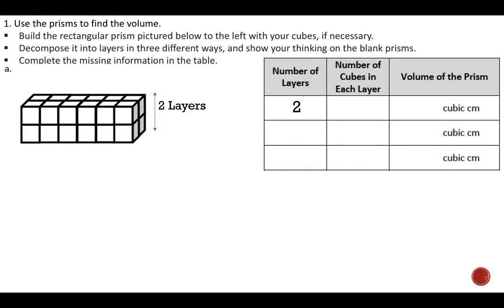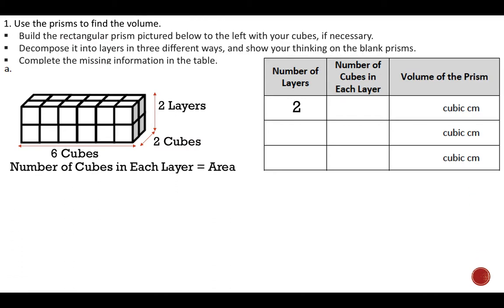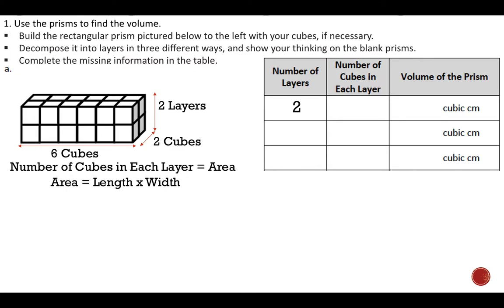Now I have to figure out how many cubes are in each layer, so I'm going to focus on the bottom layer. Since I already have my height, I just need to find my length and my width. My length is 1, 2, 3, 4, 5, 6 cubes, and my width along the side is 2 cubes. To find the number of cubes in each layer, I find the area: length times width, which is 6 times 2 equals 12.